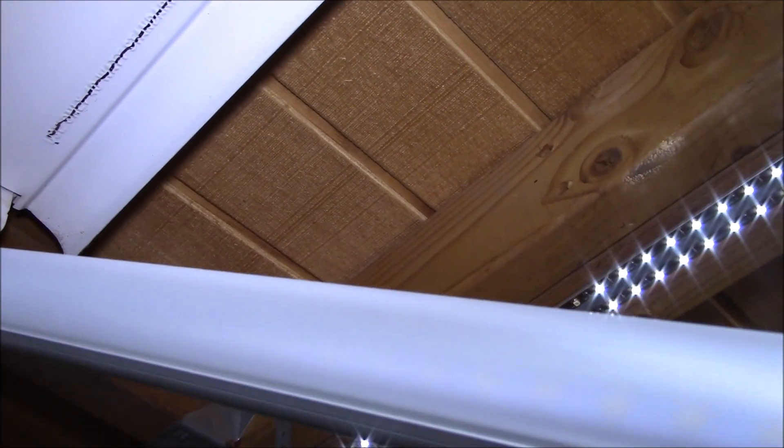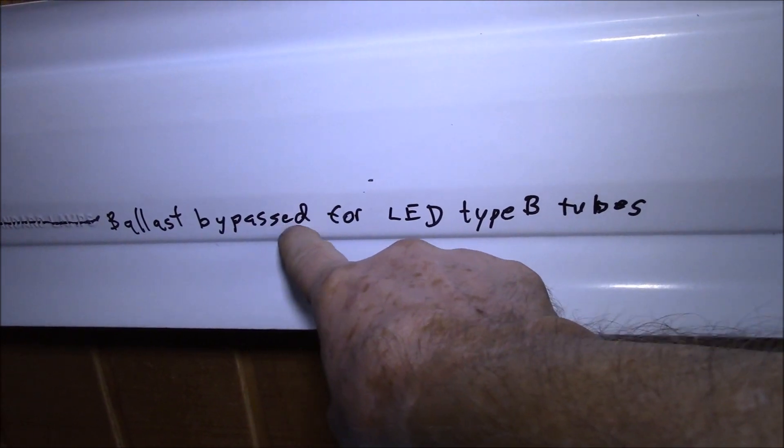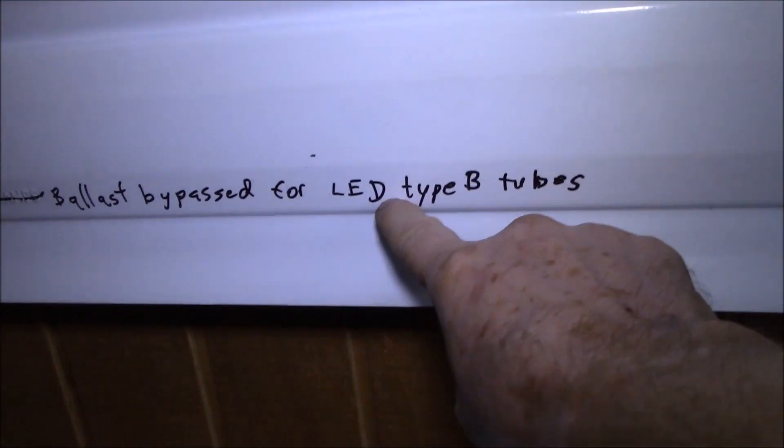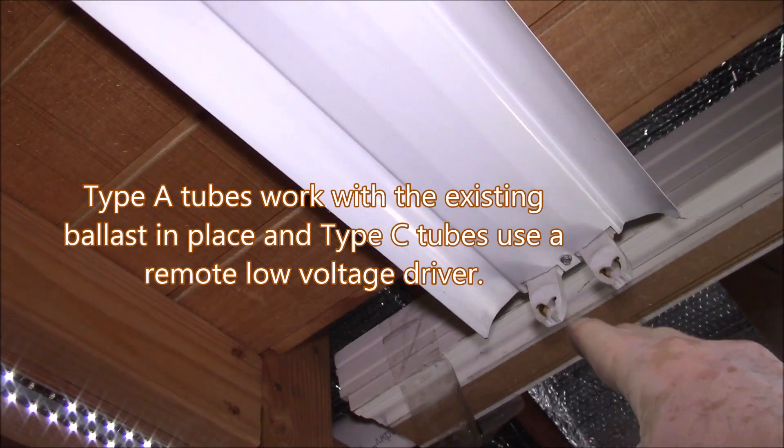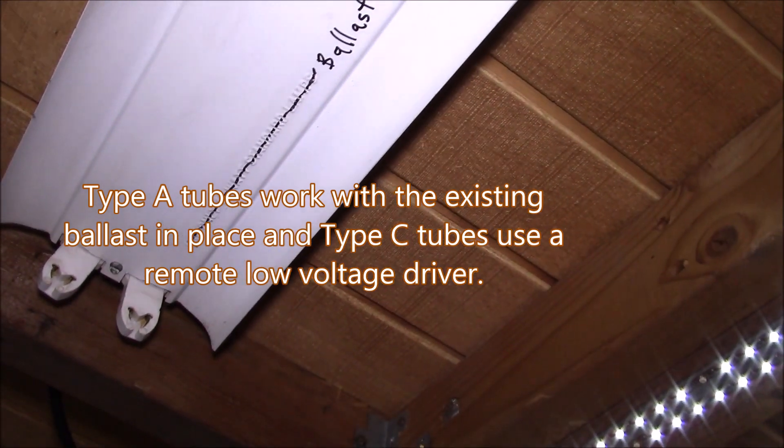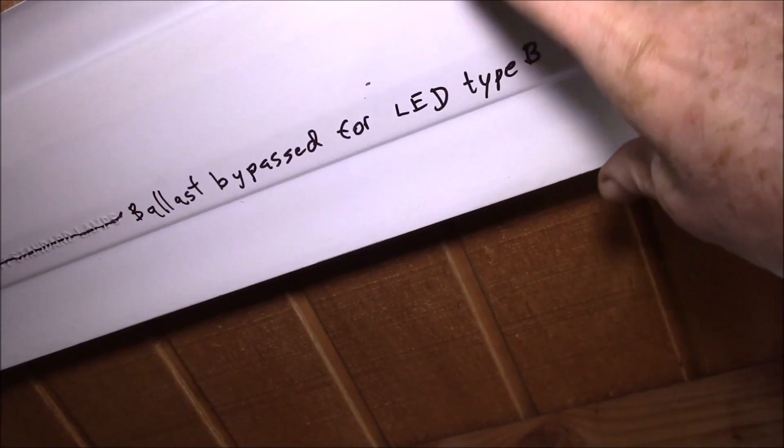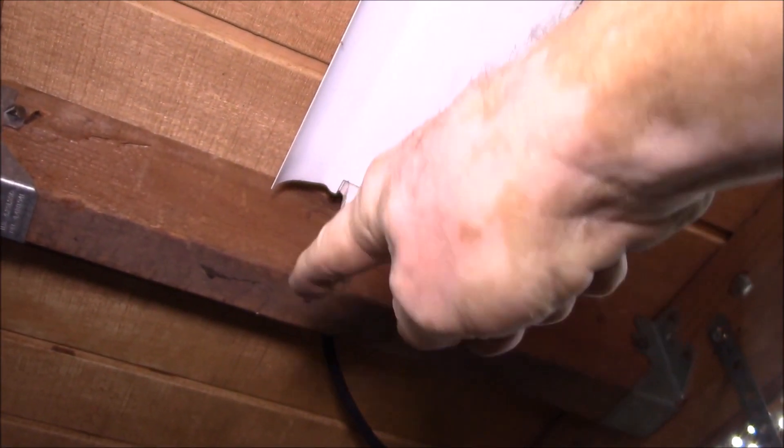I labeled these that the ballast has been bypassed for LED type B tubes. A type B tube has live at one end and then neutral at the other end. The reason I did these in place is I didn't want to take them down. The power wires are fed through the ceiling rafters there. It would probably double the amount of work to take these things down to work on them on the ground.